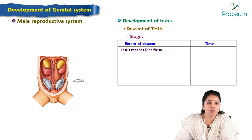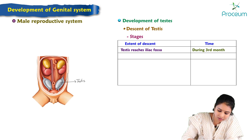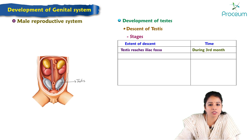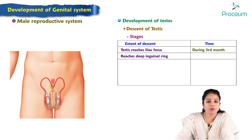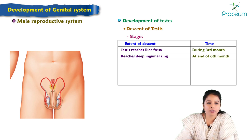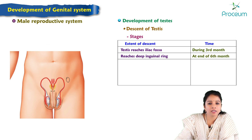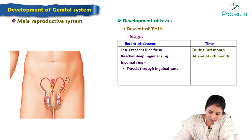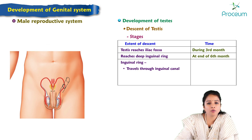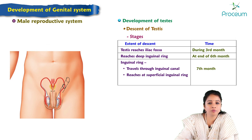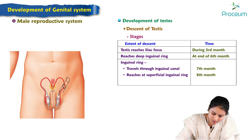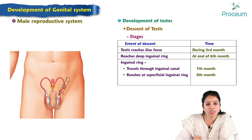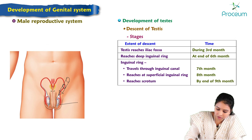The stages of descent of the testis are as follows: the testis reaches the iliac fossa during the third month of intrauterine life. At the end of the sixth month it reaches the deep inguinal ring. It travels through the inguinal canal at the end of the seventh month, reaches the superficial inguinal ring at the eighth month, and reaches the scrotum at the end of the ninth month.